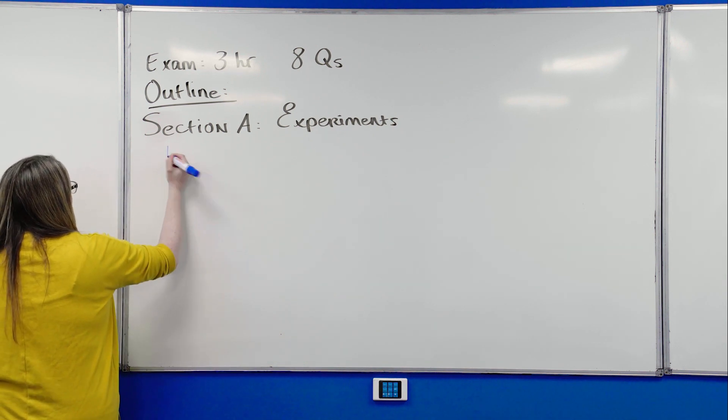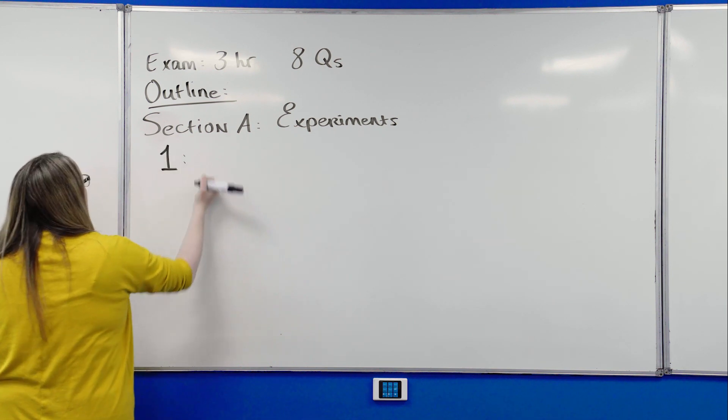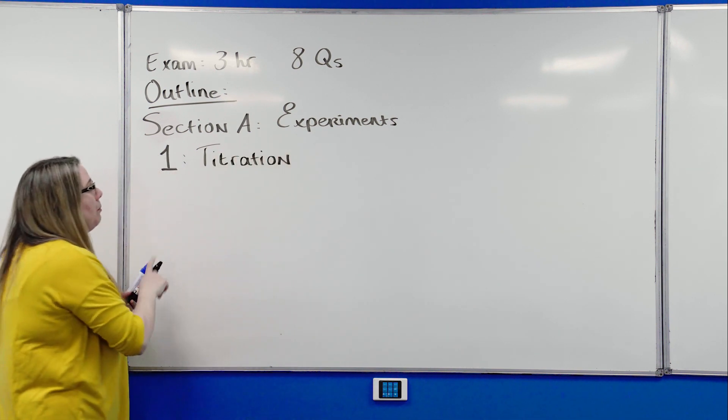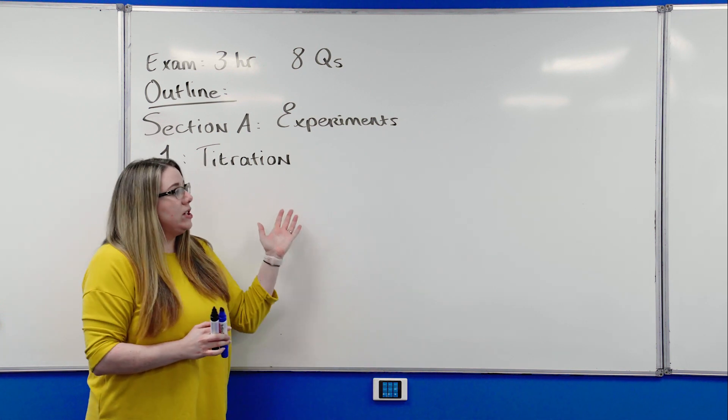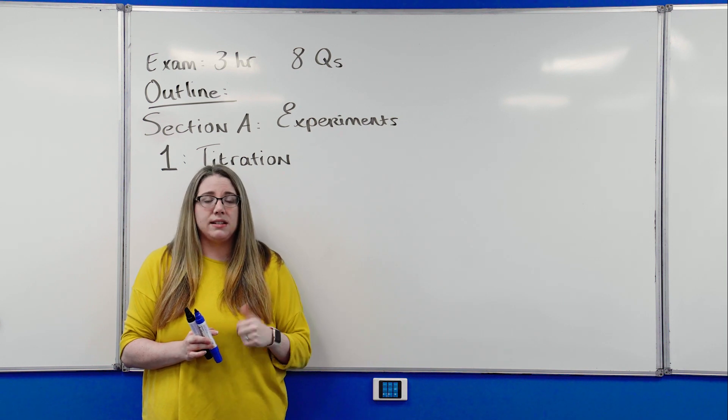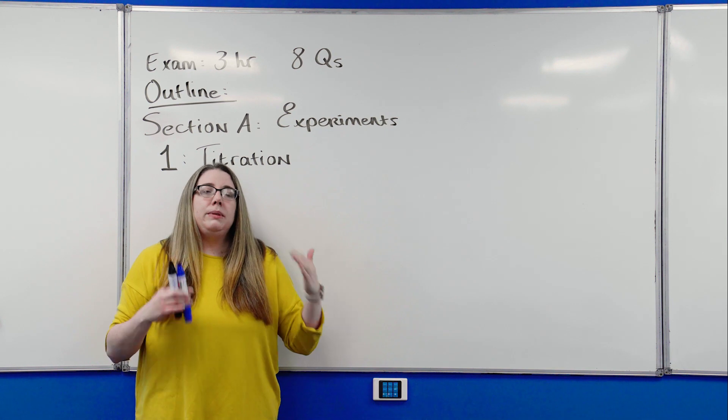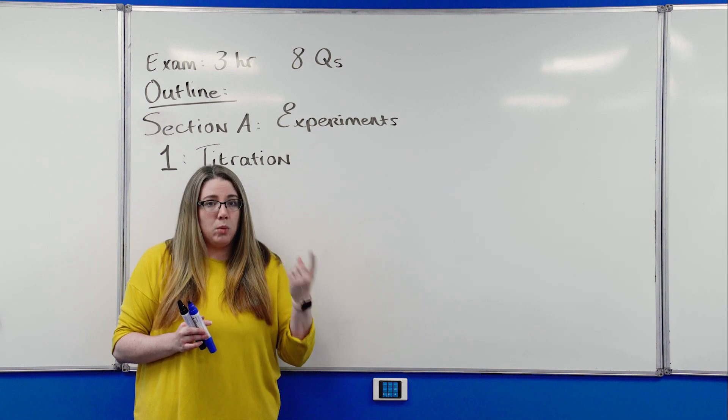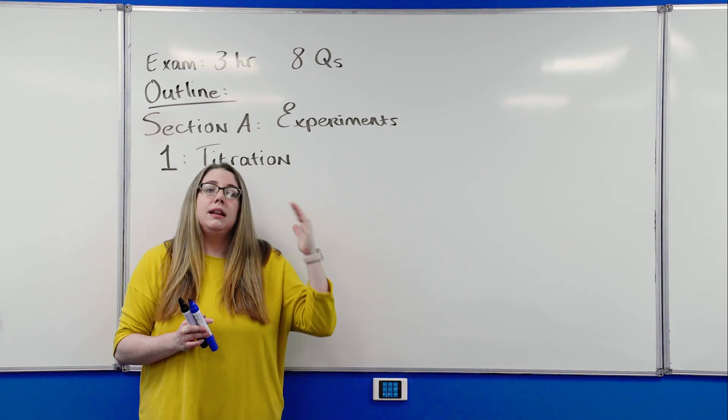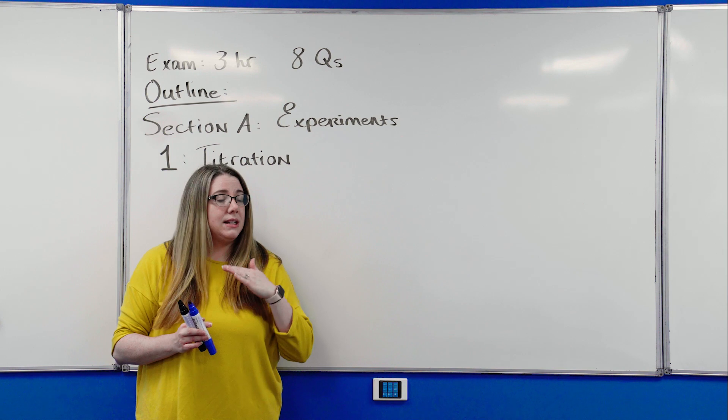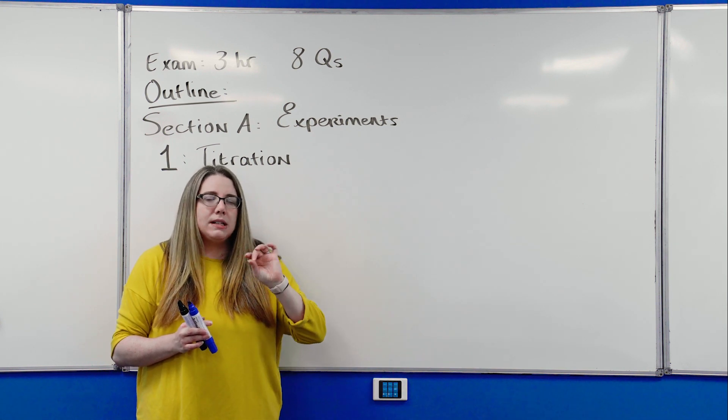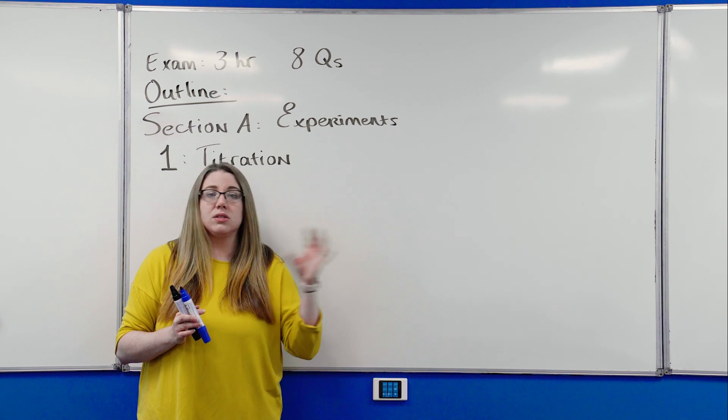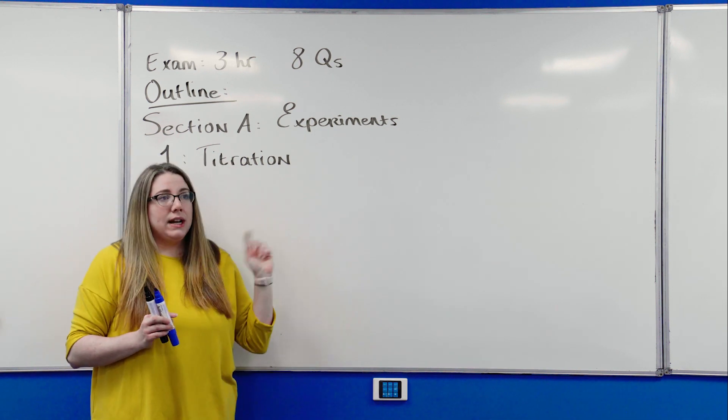The very first question on the paper, question one, is always a titration. Now there's quite a few of them, but they do follow certain patterns. For the titrations, frankly, the only thing that's different from one titration to the next is what you added to what and what the color change was. A lot of people get bogged down in the calculations. Don't. The first three steps in every calculation is exactly the same, regardless of whether you're looking at a water titration or a redox or an acid-based one.